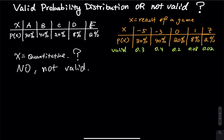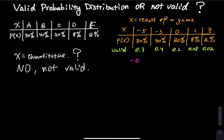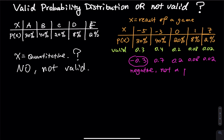Now let me change this a little. What if the first probability is negative 0.3, then 0.7, 0.2, 0.08, and 0.02? Is this valid? The answer is no, because negative 0.3 is not a probability — a probability cannot be negative.